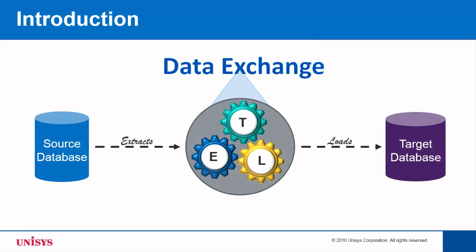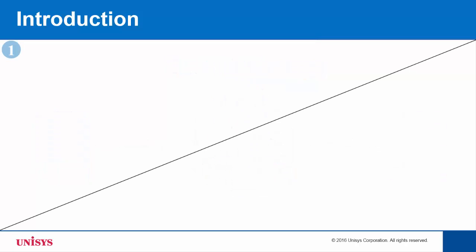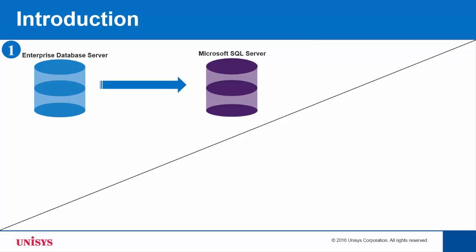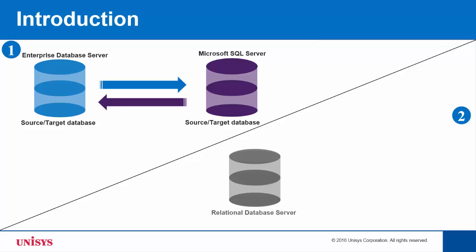In Data Exchange, you can find the following possible source to target transformations: Enterprise Database Server to SQL Server, and SQL Server to Enterprise Database Server. Enterprise Database Server and SQL Server can function as either a source database or a target database. The other possible source to target transformation in Data Exchange is Enterprise Relational Database Server to SQL Server.